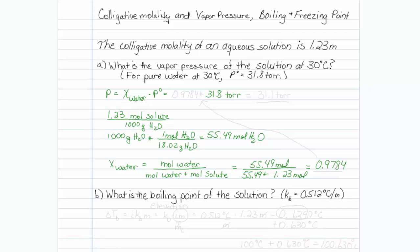Hopefully that makes sense. The solution is mostly water, so the mole fraction ought to be pretty high and close to 1. Now we know the mole fraction of water, so 0.9784 times the vapor pressure of pure water, and it is 31.1 torr when you multiply it out.